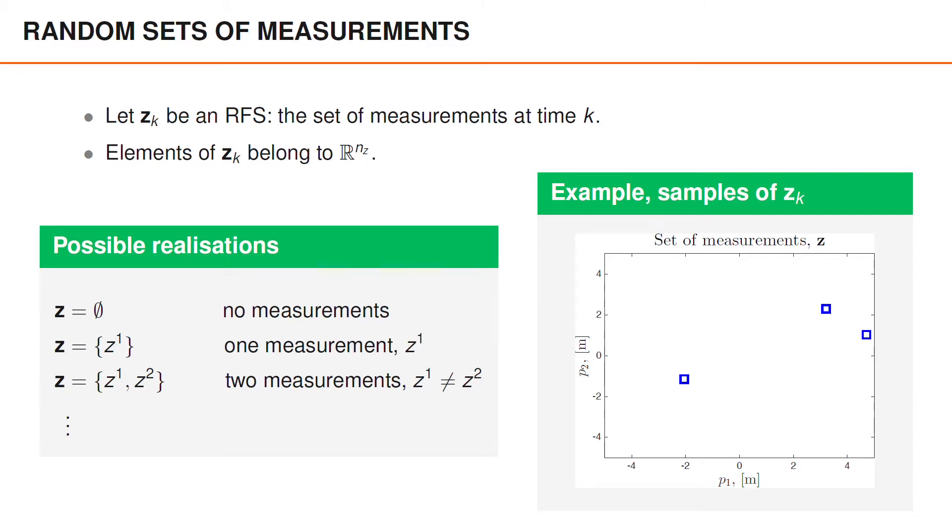As you can see, for most of the ten realizations that we've illustrated, we obtain one detection close to 3,2, and another detection around minus 2, minus 1, as well as a few other detections.